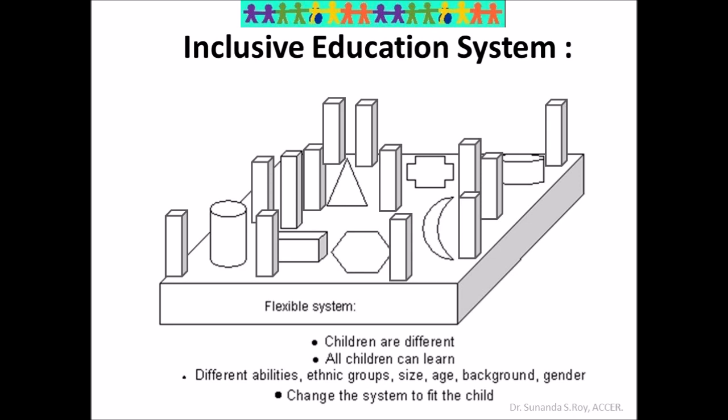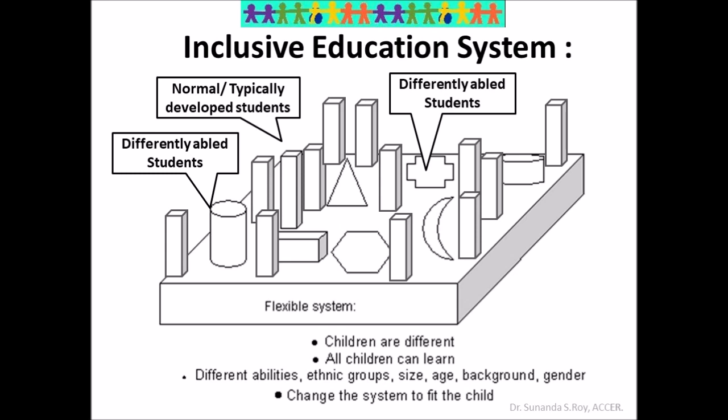Finally, there is the inclusive education system. As you can see, there are different shaped pegs and the board has corresponding holes to fit each peg. The cuboids represent normal or typically developed students, and the other shapes represent differently abled students or children with special needs, also called children with disabilities. In inclusive education, the system changes according to the needs of the differently abled or students with disabilities. It is a more flexible education system, with the belief that all children can learn.